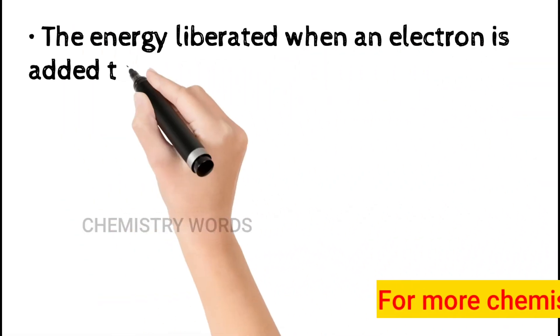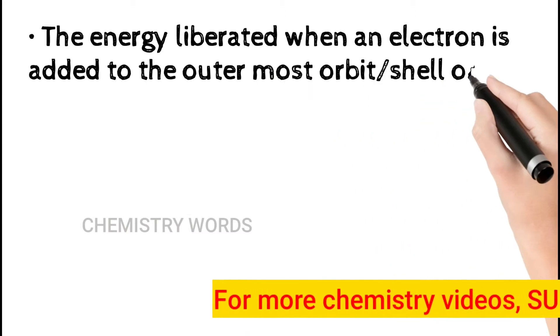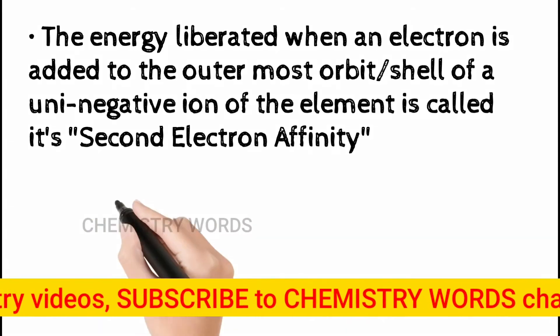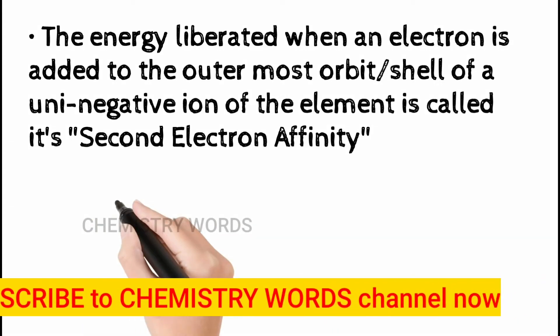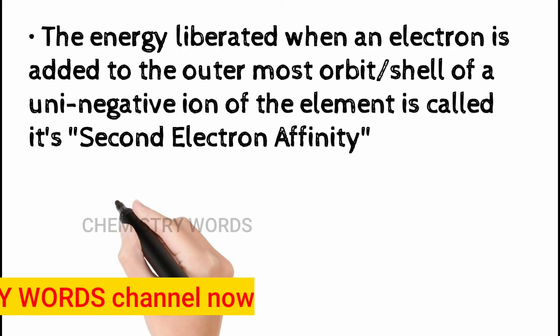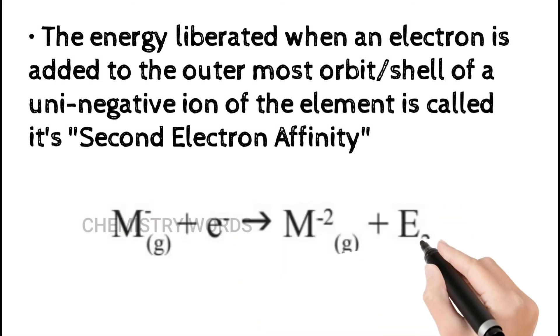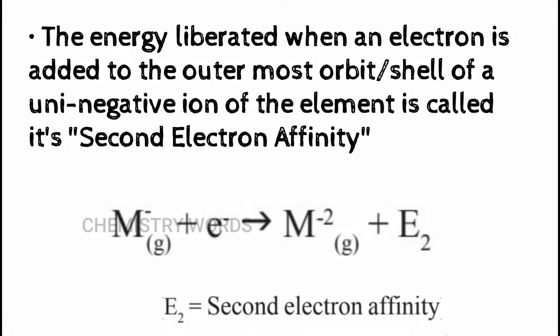The energy liberated when an electron is added to the outermost shell of a uninegative ion of the element is called its second electron affinity. If we take a uninegative ion (M⁻, with minus one charge) and add one more electron, it releases extra energy called the second electron affinity. In this example, M⁻ becomes M²⁻ and releases energy E2, where E2 is the second electron affinity.